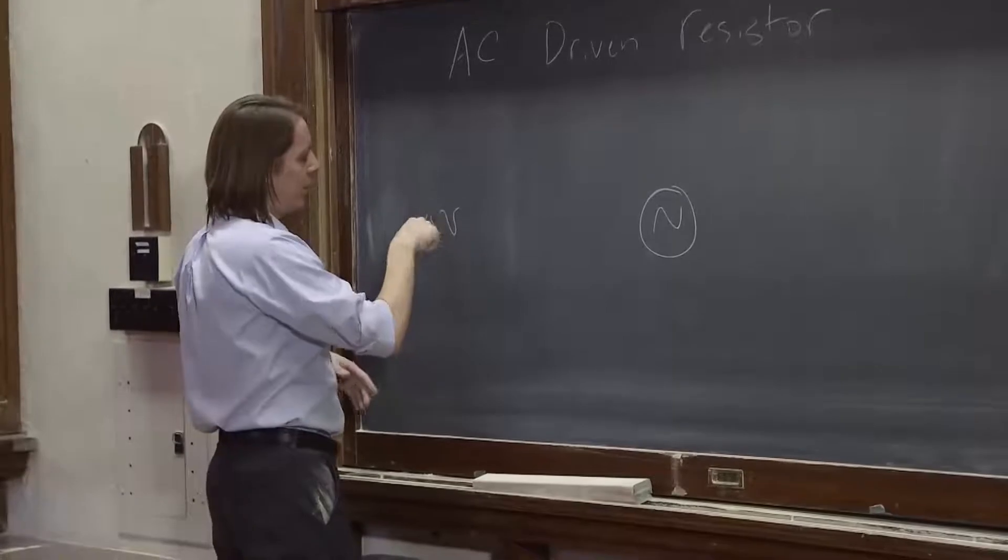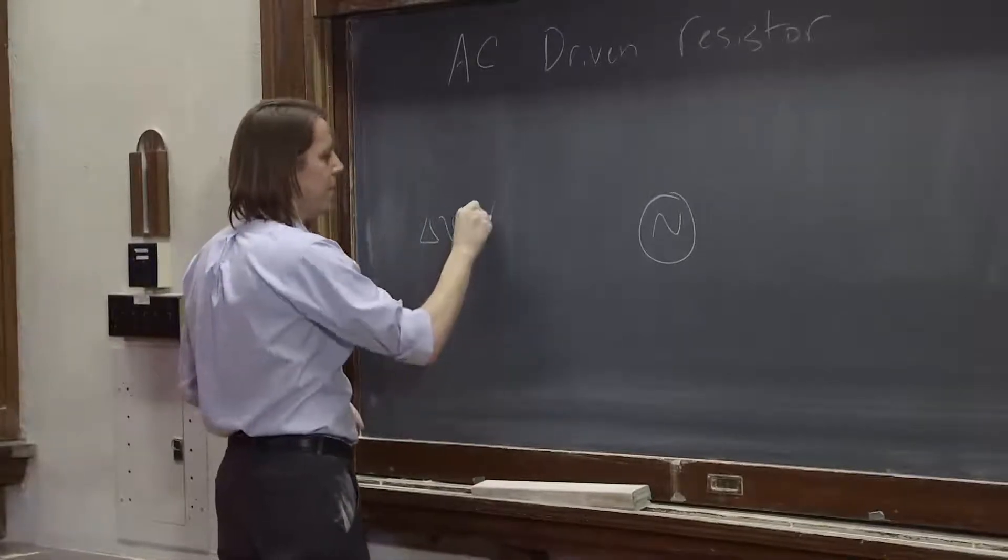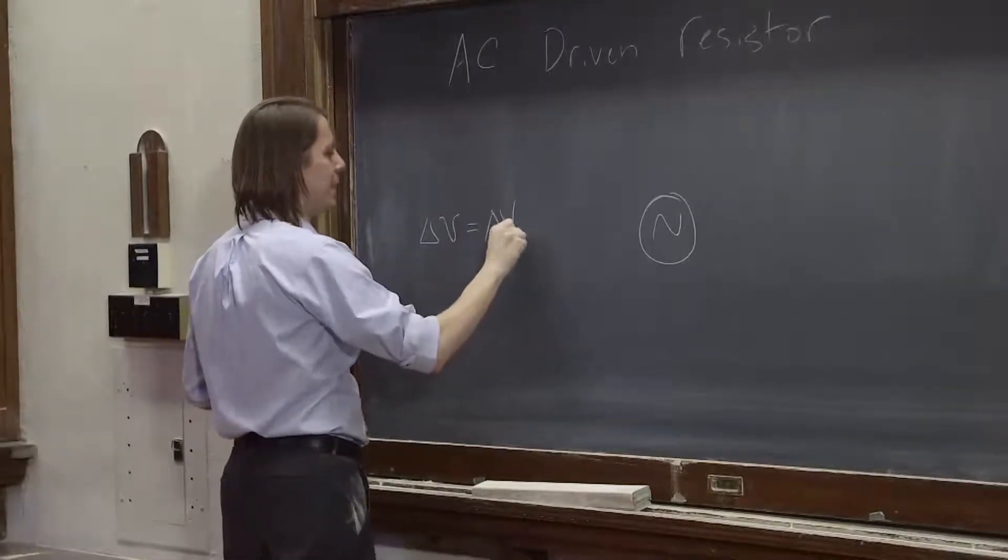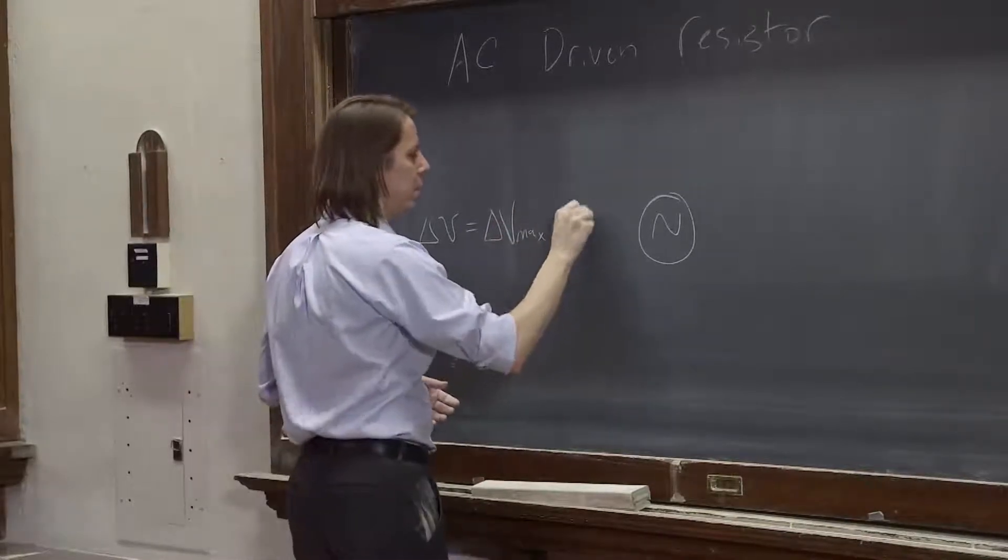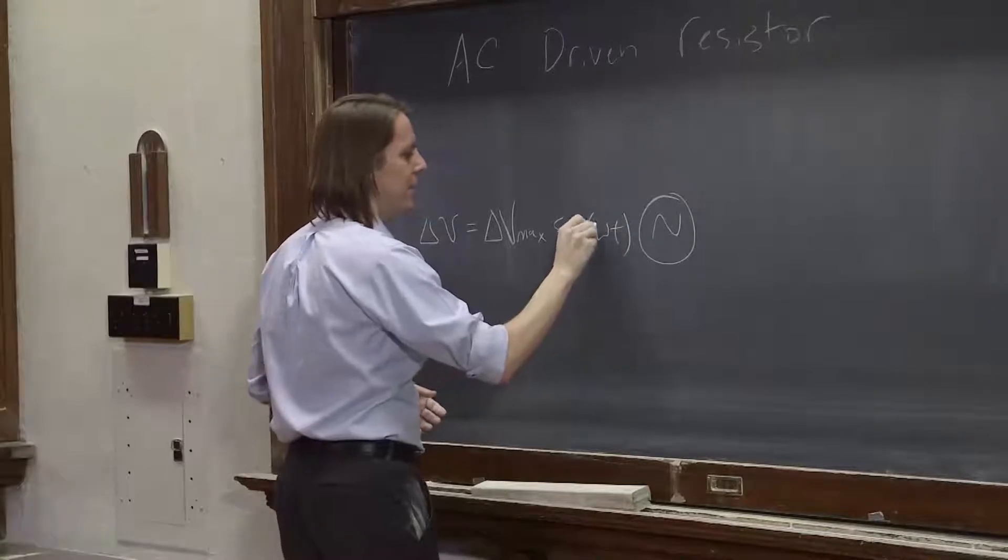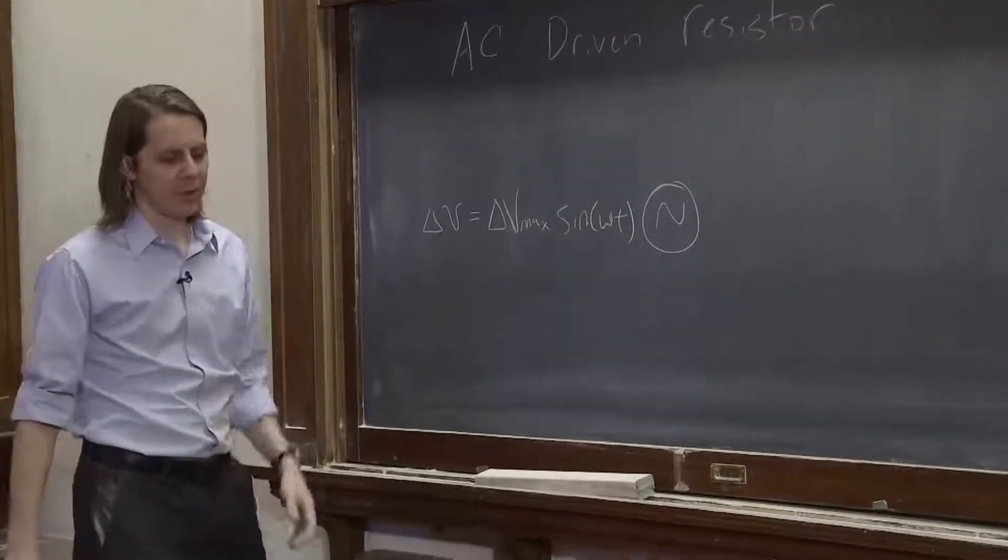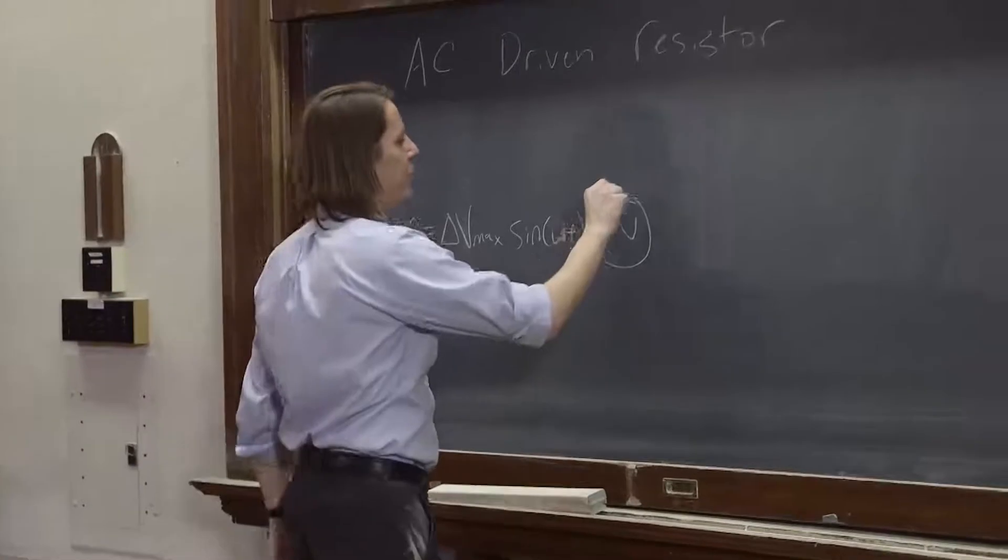We might describe it like this: Delta V, where the little script V means it's a function of time, is delta V max, the constant amplitude, times the sine of omega T, some oscillation. That might be what's coming out of this power supply.